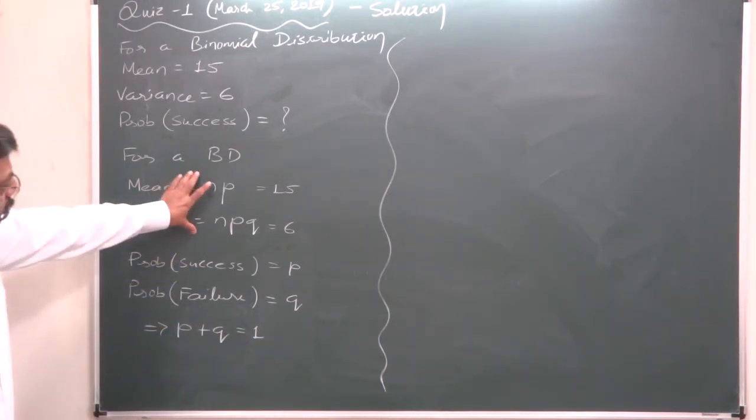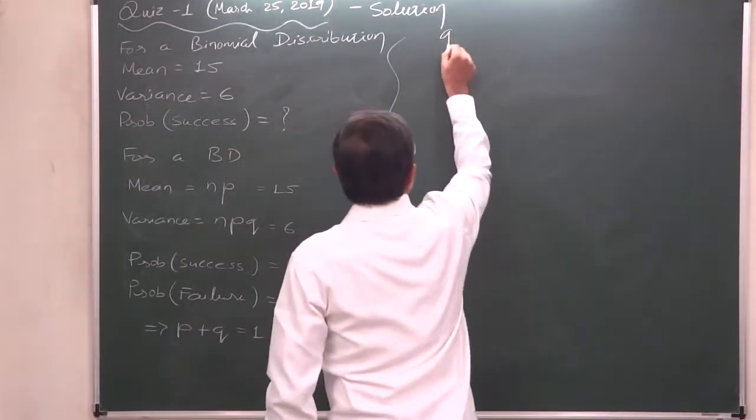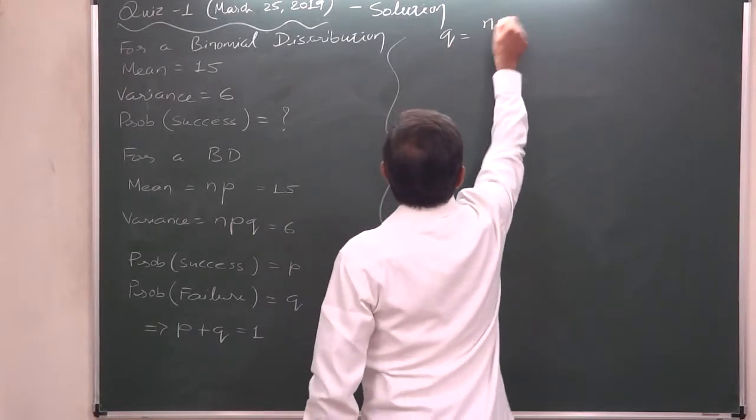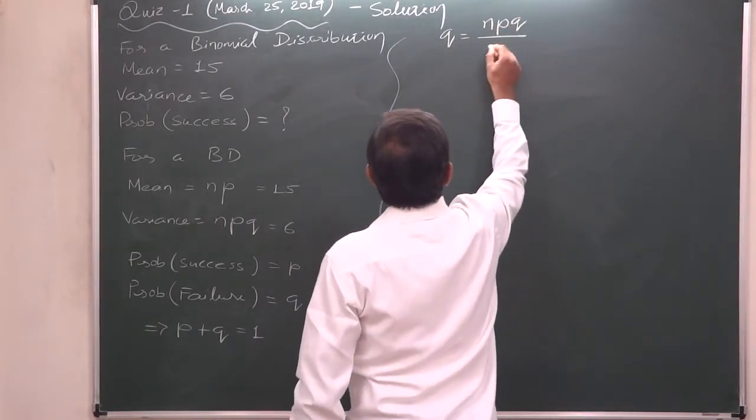And on the basis of these two, we can see that we can find out Q, the probability of failure. It will be NPQ, variance, divided by mean.